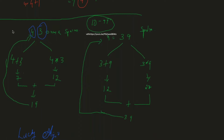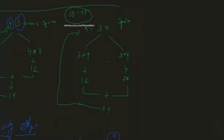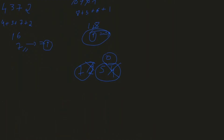Let's say we take the number 43. I want to extract the individual digits — the 4 and the 3. For 43, the 3 is in the units place and the 4 is in the tens place.